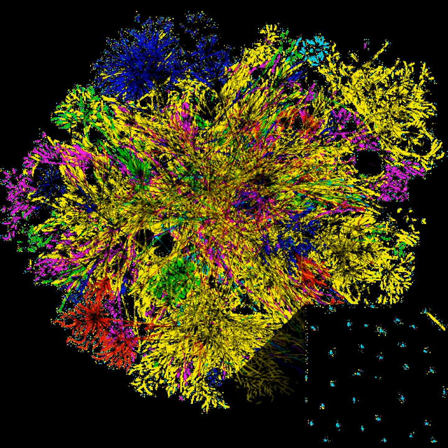Below this top layer, the transport layer connects applications on different hosts with a logical channel through the network with appropriate data exchange methods. Underlying these layers are the networking technologies that interconnect networks at their borders. The Internet layer enables computers and hosts to identify each other via Internet Protocol addresses and route their traffic via any intermediate transit networks. At the bottom of the architecture is the link layer, which provides logical connectivity between hosts on the same network link, such as a local area network or a dial-up connection.